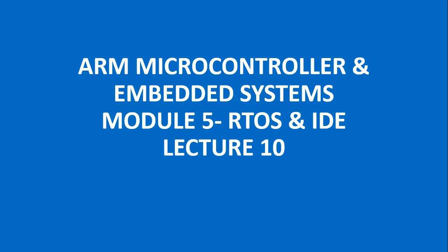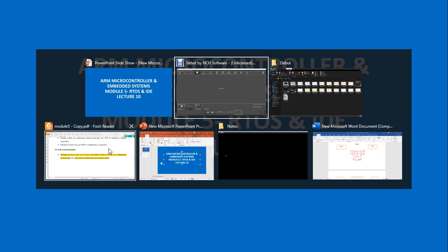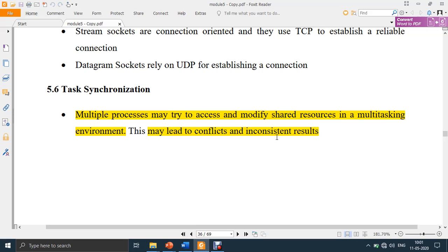Welcome to lecture 10 on module 5 for the subject R Microcontroller and Embedded Systems, subject code 15EC or 17EC62. In the previous lecture we discussed about task communication — what it is, when it is needed, and the various types. Task communication is necessary for conveying data from one process to another, since two processes may need to communicate because they require input from one another to complete their operation.